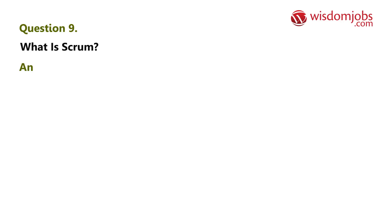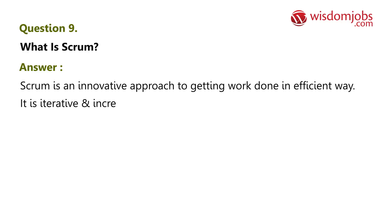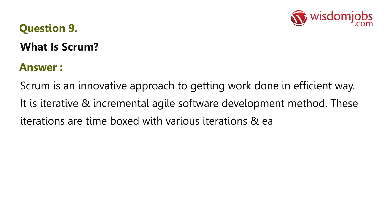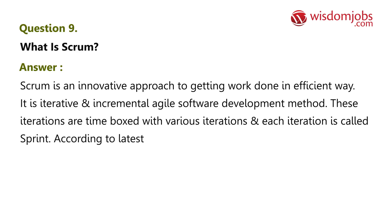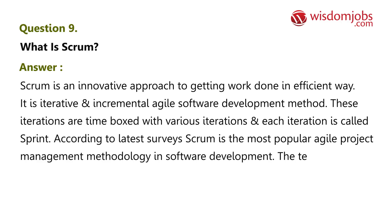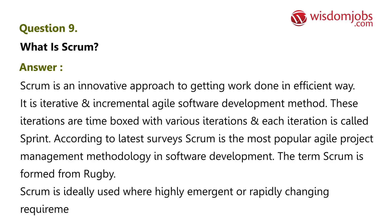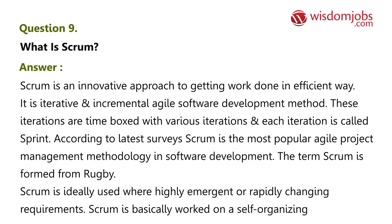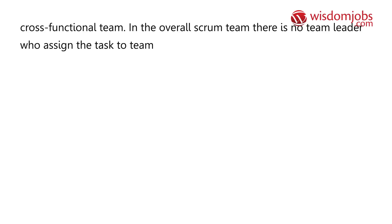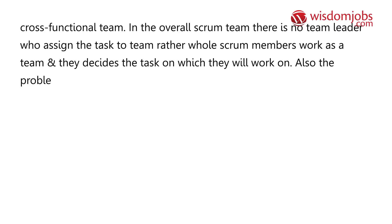Question 9: What is Scrum? Answer: Scrum is an innovative approach to getting work done in an efficient way. It is an iterative and incremental agile software development method where iterations are time-boxed, and each iteration is called a sprint. According to latest surveys, Scrum is the most popular agile project management methodology in software development. The term scrum is formed from rugby. Scrum is ideally used where highly emergent or rapidly changing requirements exist. Scrum works on a self-organizing, cross-functional team where no team leader assigns tasks — members work as a team, decide tasks themselves, and resolve problems together.